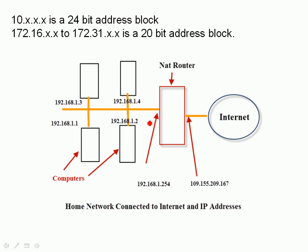These internal IP addresses are assigned by the NAT router using a service called DHCP, which is built into the NAT router, and they are dynamic addresses — in other words, they can change. Another important aspect of these internal IP addresses is that they're non-routable. The 192.168 address range is non-routable on the internet, which means if you send a packet out onto the internet containing this address, it will get discarded by the first router it comes across.